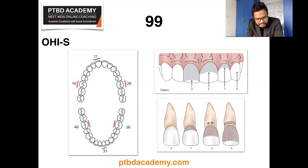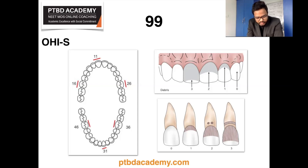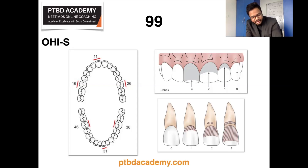Debris index score 2 is assigned when soft debris covers more than one third but not more than two thirds of the exposed tooth surface. Score 3 is assigned when debris covers more than two thirds of the exposed tooth surface. For the calculus index: score 0 — no calculus; score 1 — supragingival calculus covering not more than one third of the exposed tooth surface; score 2 — supragingival calculus covering more than one third but not more than two thirds, and/or presence of individual flecks of subgingival calculus around the cervical portion of the tooth.